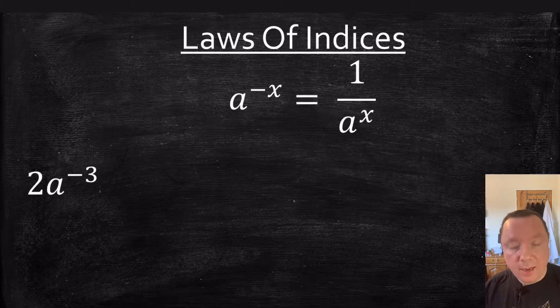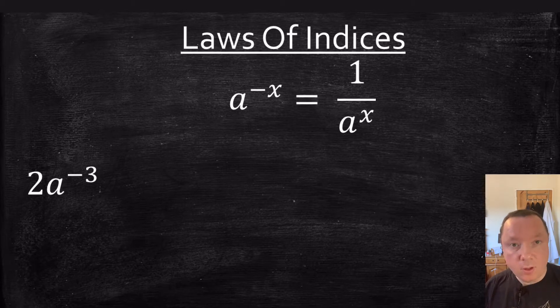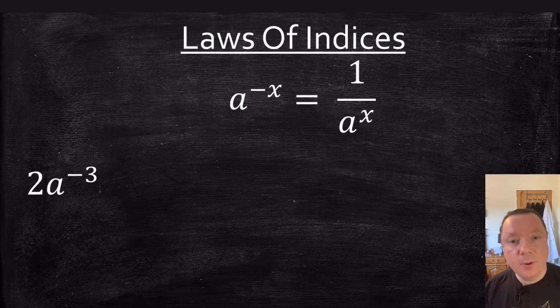Negative powers: a to the power of minus x is the same as 1 over a to the power of x. Let's look at that as an example. Let's say we have 2a to the power of minus 3 and we want to change it to a positive power.